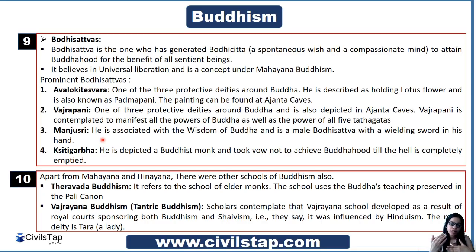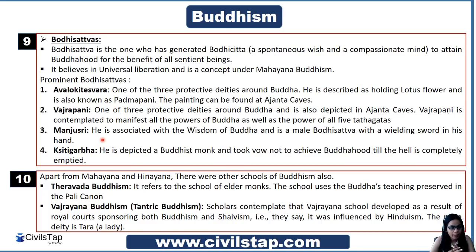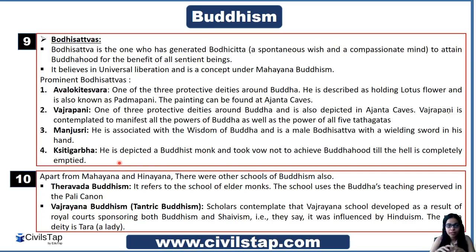UPSC can ask related statements about these Bodhisattvas — for example, if a statement mentions 'wielding sword in hand,' the answer would be Manjushri. Kshitigarbha is depicted as a Buddhist monk and took a vow not to achieve Buddhahood until hell is completely emptied — meaning he delays his own salvation to teach and liberate all beings. These were the four prominent Bodhisattvas.